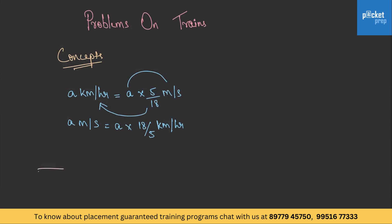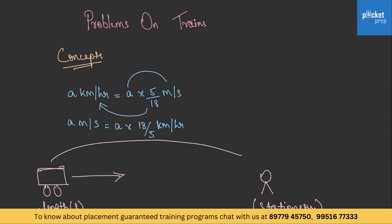Now, let us assume there is a train of length L and a person standing stationary — not moving anywhere. The train is moving in this direction with some speed. The time taken by this train to pass this stationary object will be equal to the time taken to cover L meters.